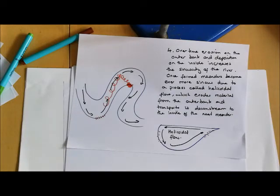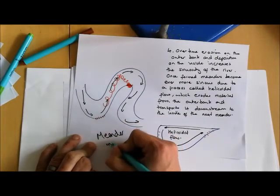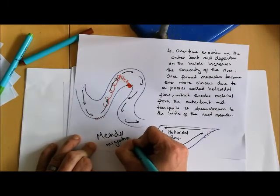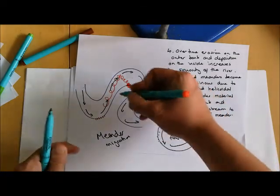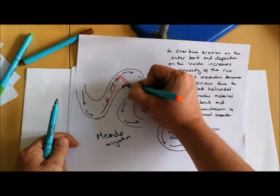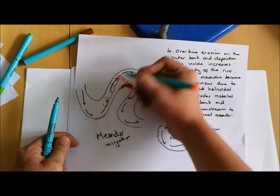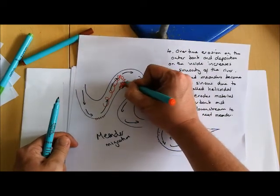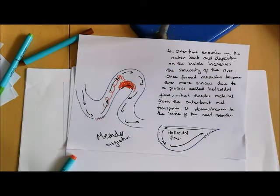What we also get here is something that we call meander migration. If you can imagine, you're having material deposited on the inside of this bend here by that helicoidal flow. So actually what's happening is the land is kind of building out that way, and over time it's going to keep doing that, building out further and further and further. At the same time, remember we've got undercutting on the outside of that meander bend.